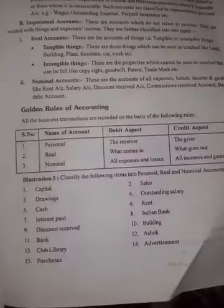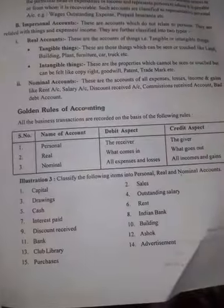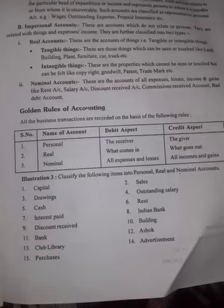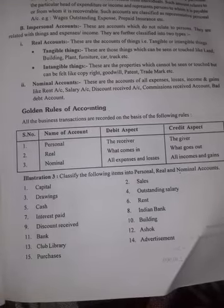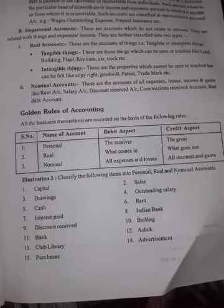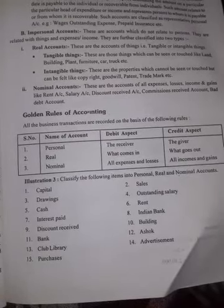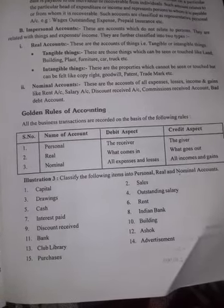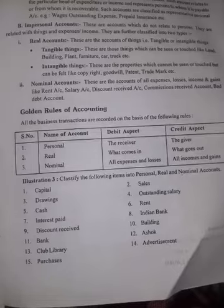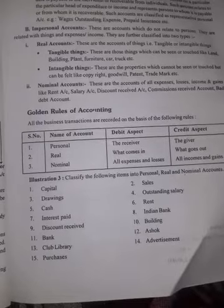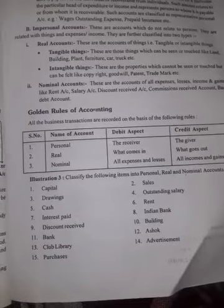The first point is capital. Capital is a personal account. Drawings is also a personal account.